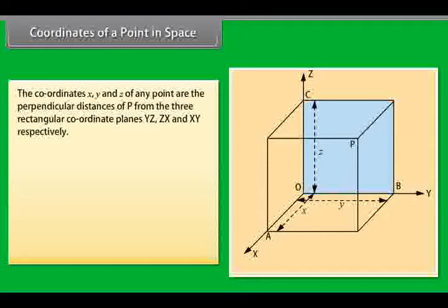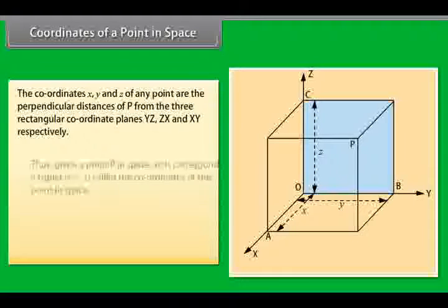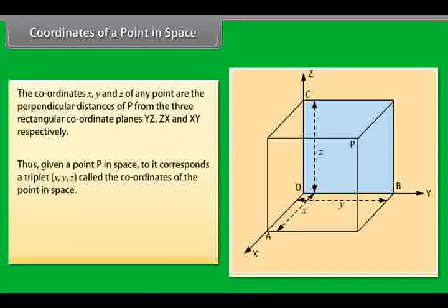The coordinates x, y and z of any point are the perpendicular distances of P from the three rectangular coordinate planes y-z, z-x and x-y respectively. Thus, given a point P in space, to it corresponds a triplet x, y, z called the coordinates of the point in space.